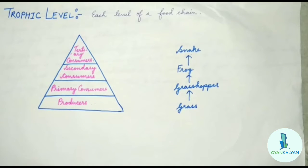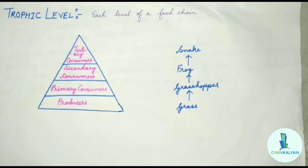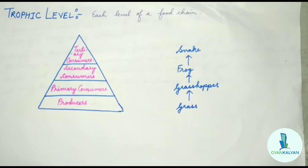Here I have drawn a pyramid which represents the trophic levels of a food chain consisting of grass, grasshopper, frog, and snake. The first trophic level is the producer — grass. The second trophic level consists of the primary consumer — the grasshopper. The third trophic level consists of the secondary consumer — the frog. And the fourth trophic level consists of the tertiary consumer — the snake. So the food chain of grass, grasshopper, frog, and snake is represented in the shape of a pyramid comprising producers, primary consumers, secondary consumers, and tertiary consumers.